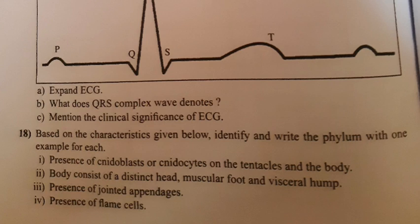3. Phylum Arthropoda. Examples: Apis (honeybee), Bombyx (silkworm), Laccifer (lac insect), vectors — Anopheles, Culex, and Aedes (mosquitoes), Locusta (locust), and Limulus (king crab). Any one example.